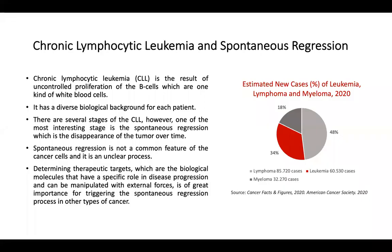According to the American Cancer Society, leukemia is the second leading blood cancer with approximately 60,000 new cases identified in 2020. Leukemia has different subtypes based on its origin, and the most common type in adults is chronic lymphocytic leukemia, which is the result of uncontrolled proliferation of B cells. It has a really diverse biological and clinical background which determines the stage of the disease. One of the most interesting stages is known as spontaneous regression, which is the disappearance of the tumor over time with or without any treatment.